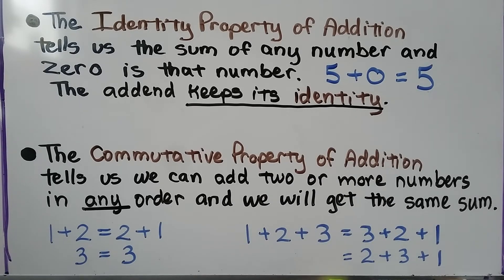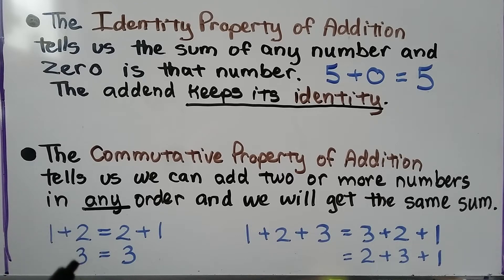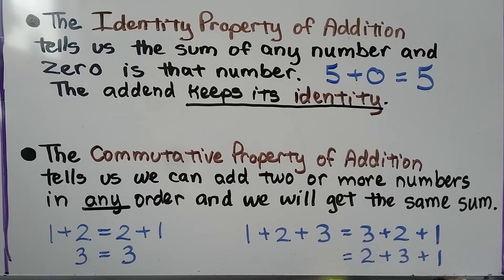The commutative property of addition tells us we can add two or more numbers in any order and we'll get the same sum. 1 plus 2 is equal to 2 plus 1 — this side equals 3 and this side equals 3. We can add 1 plus 2 plus 3 and that equals 3 plus 2 plus 1, or 2 plus 3 plus 1, or even 1 plus 3 plus 2. It doesn't matter what order we add — the commutative property says so.